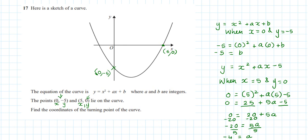So once that's done, I'm going to rewrite my equation. y equals x squared minus 4x minus 5, because the value of a is -4 and b is -5.